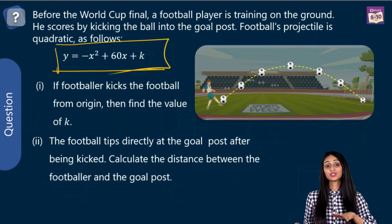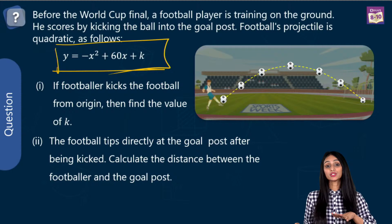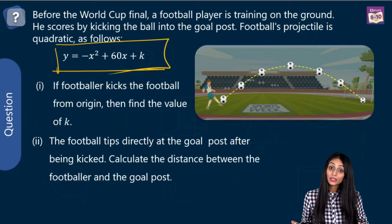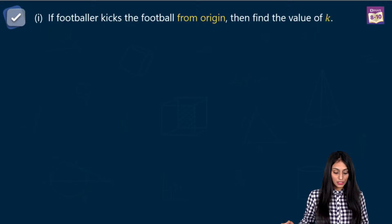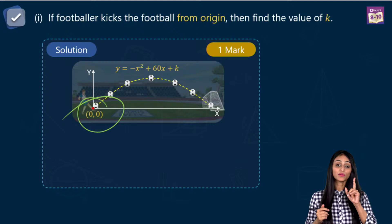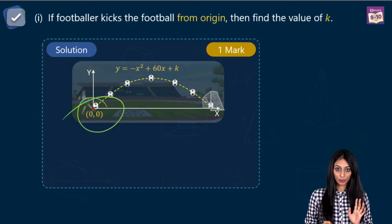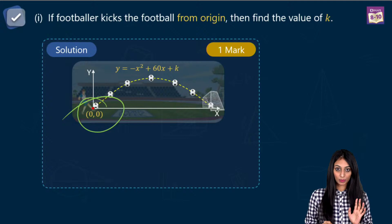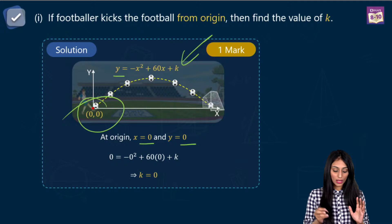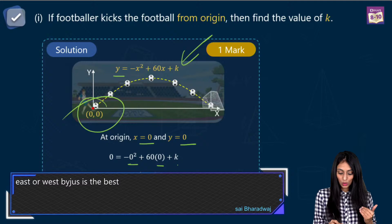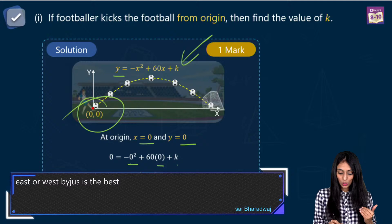There are two questions based on this. First: if the footballer kicks the football from the origin, find the value of K. At the origin, both X and Y coordinates are zero. Substituting into the equation: minus zero squared plus 60 times zero plus K equals zero. So K equals zero.